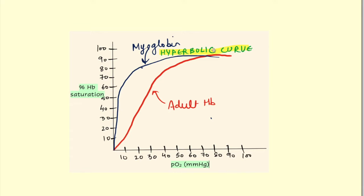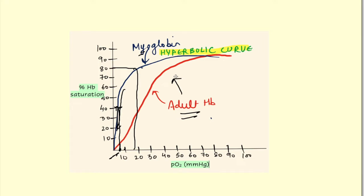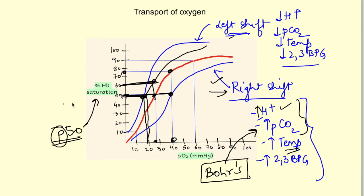Myoglobin has a hyperbolic dissociation curve rather than sigmoid. It binds oxygen rapidly, becoming almost fully saturated around 15 mmHg, and only releases oxygen when partial pressure falls below about 5-10 mmHg. Myoglobin is present in muscle and acts as an oxygen store: it loads oxygen released by adult hemoglobin and releases it only in highly metabolizing tissues such as exercising muscles.